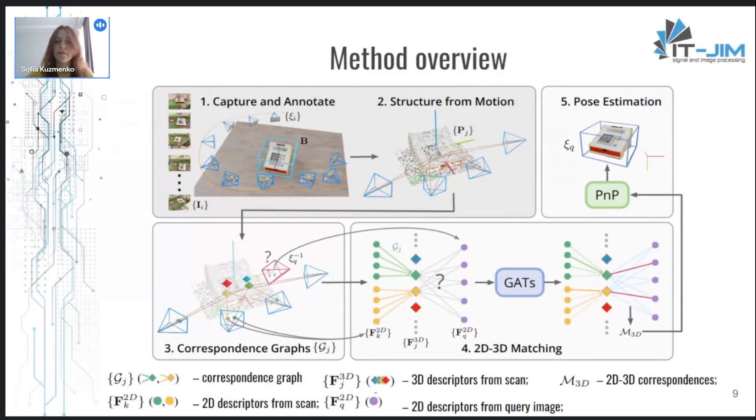Now we can put everything together. So when the video scan of the object is made, it is reconstructed with SFM once. And during SFM, a correspondence graph is constructed which associates each 3D point with a set of two-dimensional features. These two-dimensional features are aggregated with the aggregation attention layer into 3D descriptors. And when we receive a new query image which needs to be localized in the object frame, its 2D features are extracted and passed through this graph attention network, which predicts 2D-3D point correspondences. And finally, the object pose is computed by solving the PNP problem.